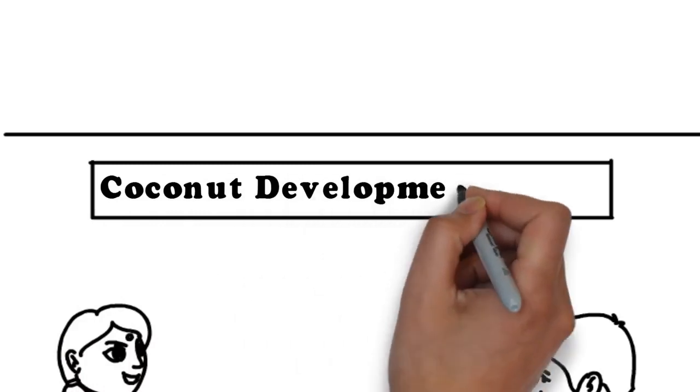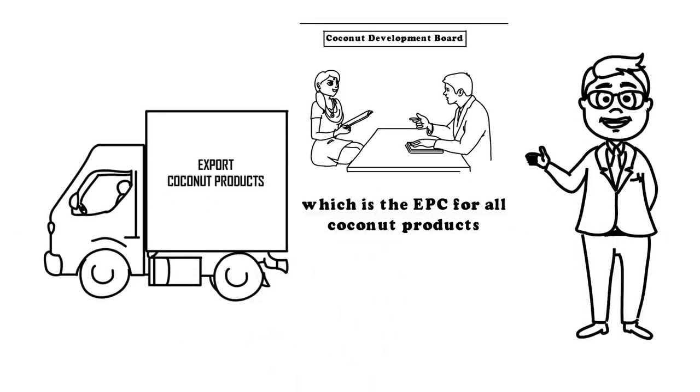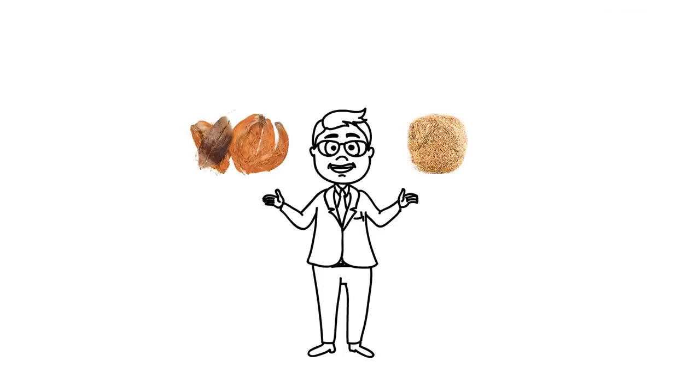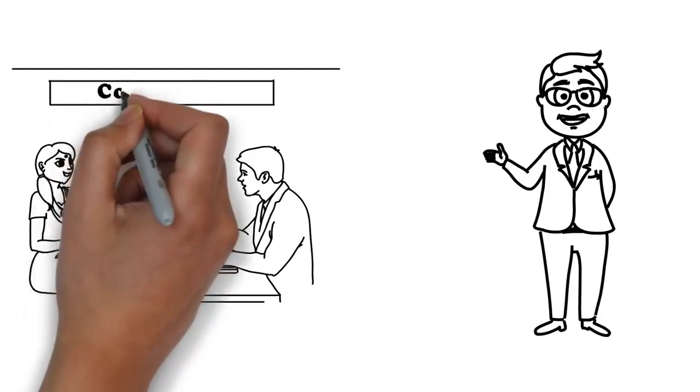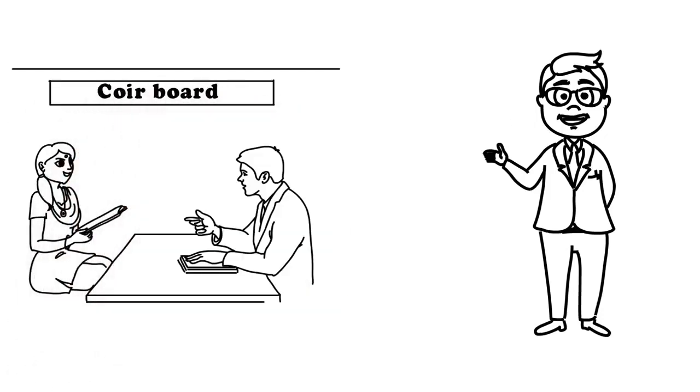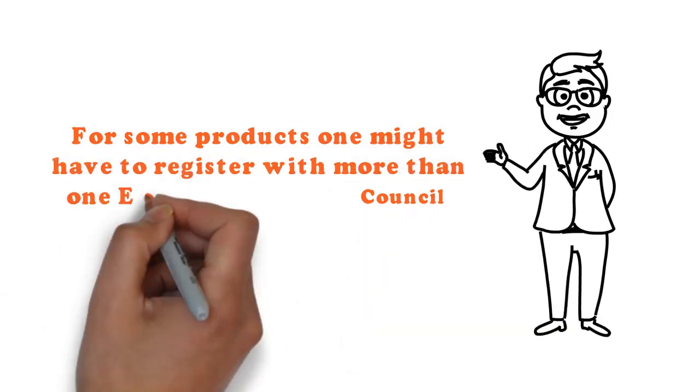she would have to register with Coconut Development Board, which is the EPC for all coconut products other than those made from coconut husk and fiber. For exporting husk and fiber products, she would also have to register with the Coir Board. For some products, one might have to register with more than one Export Promotion Council.